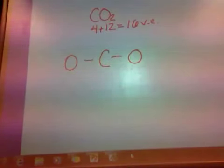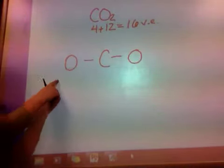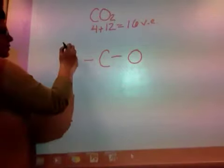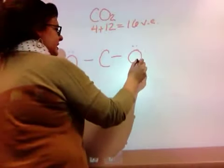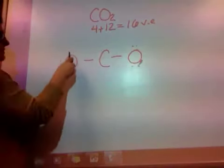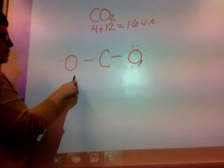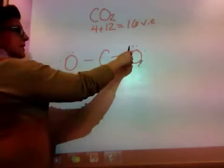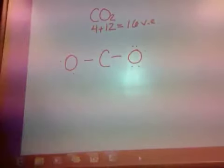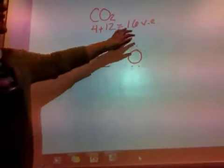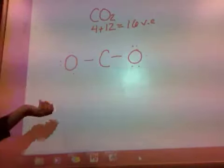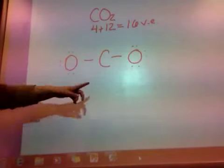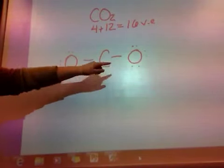We want to make sure the surrounding atoms are filled first. Oxygen already has 2 electrons and wants 8, so we add 6 more to each oxygen. Counting all electrons: I had 6 on one side, then 7 through 16. So I've fulfilled the 16 valence electron count. Oxygens both have 8, but look at carbon — carbon only has 4.